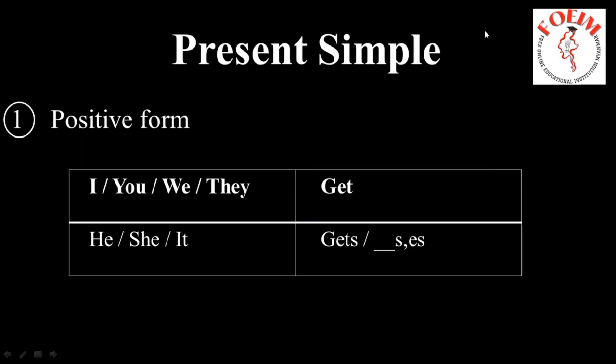For he, she, it — we add an -s to the verb. For example: he gets, she gets, or it gets.